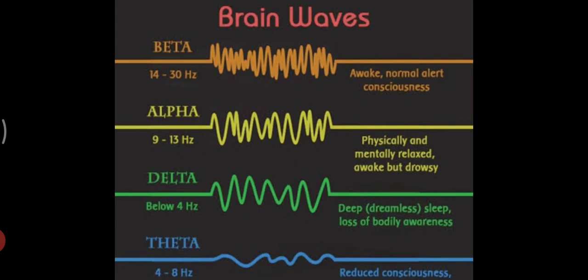They are divided into bandwidths to describe their functions, but are best thought of as a continuous spectrum of consciousness from slow, loud, and functional to fast, subtle, and complex. Our brain waves change according to what we are doing and feeling.